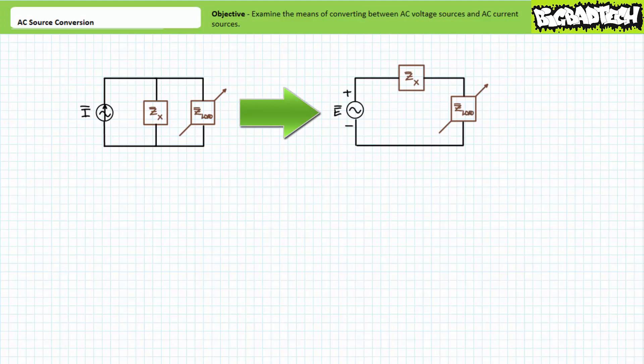This technique also works in reverse. Source conversion also allows one to exchange an AC voltage source in series with a fixed impedance for an equivalent AC current source in parallel with a fixed impedance without otherwise affecting circuit behavior.